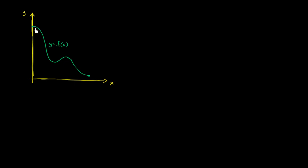I've graphed the function y is equal to f of x over this interval. It looks like it's between 0 and some positive value. I want to think about the maximum and minimum points on this. We've already talked a little bit about absolute maximum and absolute minimum points on an interval. We hit a maximum point right over here, right at the beginning of our interval. When x is equal to 0, this is the absolute maximum point for the interval, and the absolute minimum point happens at the other endpoint. So if this is a and this is b, the absolute minimum point is f of b, and the absolute maximum point is f of a.